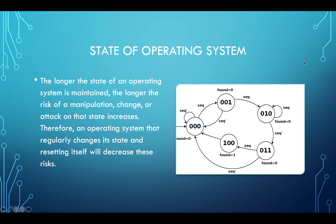Regarding state of the operating system: the longer an OS state is maintained, the greater the risk of manipulation, change, or attack on that state. Therefore, an OS that regularly resets its state will decrease these risks. We can maintain a known image of each device, clear the device, and spin up a new instance based on that image — effectively changing the OS state frequently and preventing actors from compromising it.